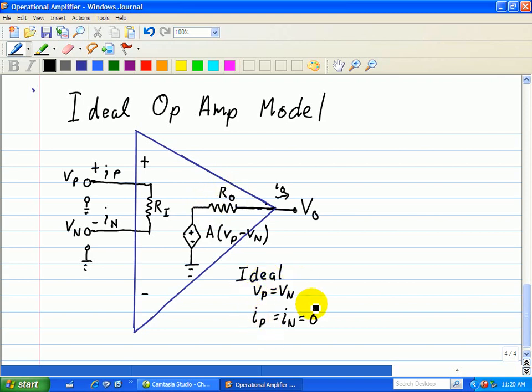Here, I wrote down two ideal characteristics associated with an ideal op-amp when we analyze a circuit. And usually, these are good approximations, such that VP equals VN, and that IP equals IN equals zero. And we'll see why.